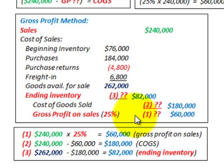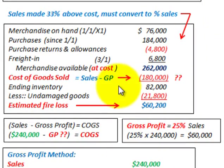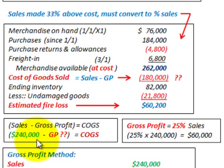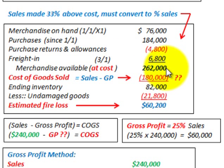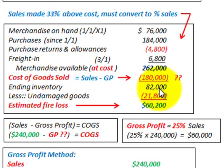So the steps are: first determine gross profit on sales, then cost of goods sold, then ending inventory. Going back to the example: sales of $240,000 minus gross profit of $60,000 (25% of sales) equals cost of goods sold of $180,000. Merchandise available at $262,000 less $180,000 gives ending inventory of $82,000. We had $21,800 of undamaged goods, so subtracting that gives an estimated fire loss of $60,200.